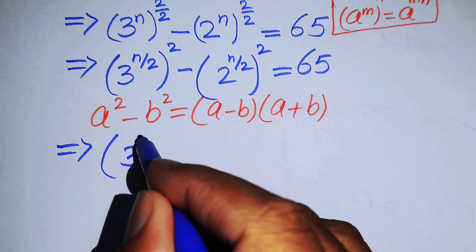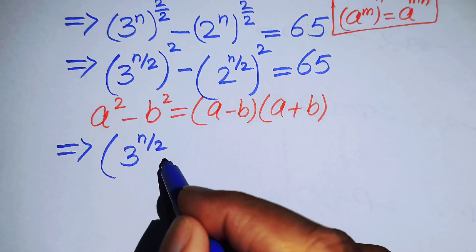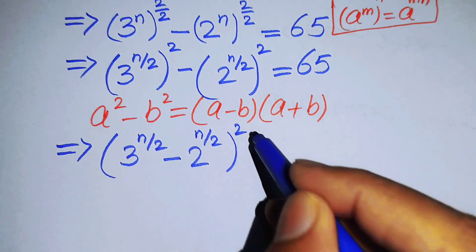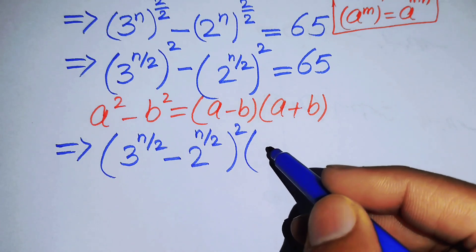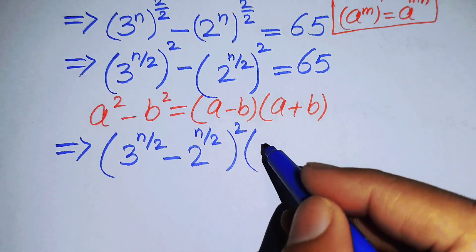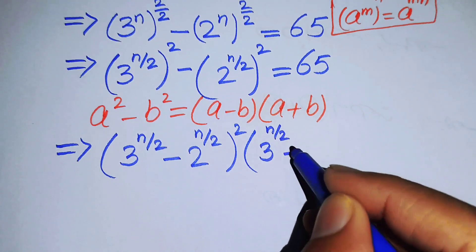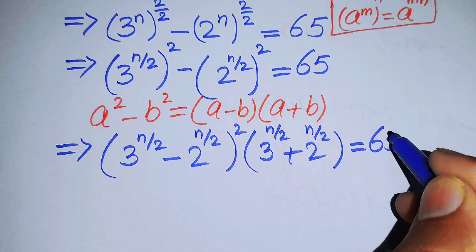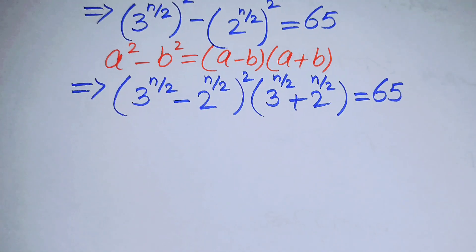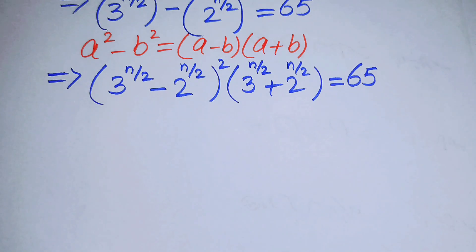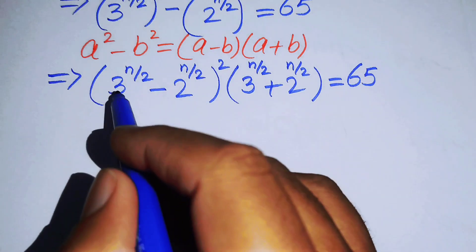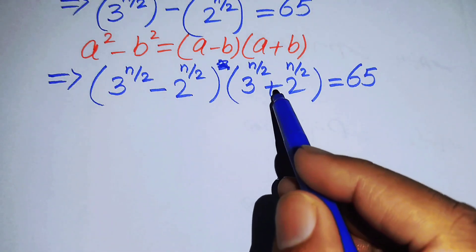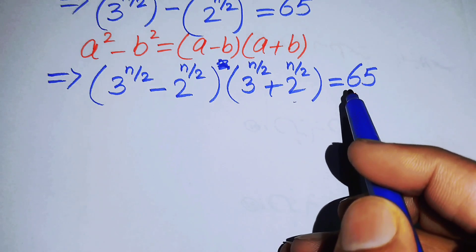The above term becomes: (3 to the power of n over 2 minus 2 to the power of n over 2) times (3 to the power of n over 2 plus 2 to the power of n over 2) equals 65. So on the left-hand side we now have two factors.